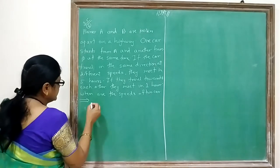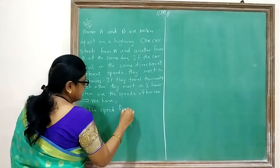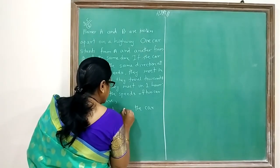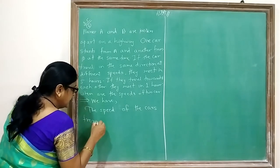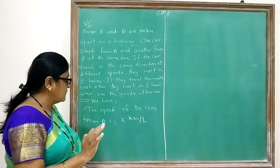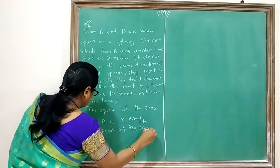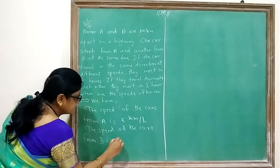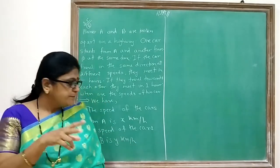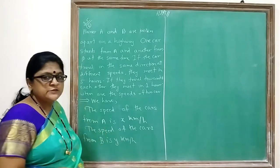We suppose the speed of car A is X km per hour, and the speed of car B is Y km per hour.